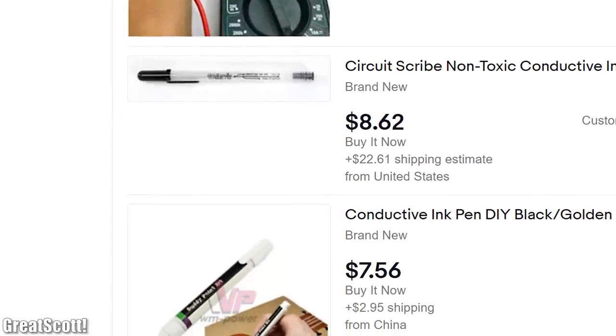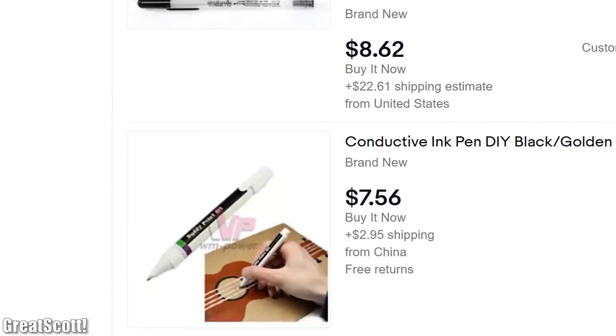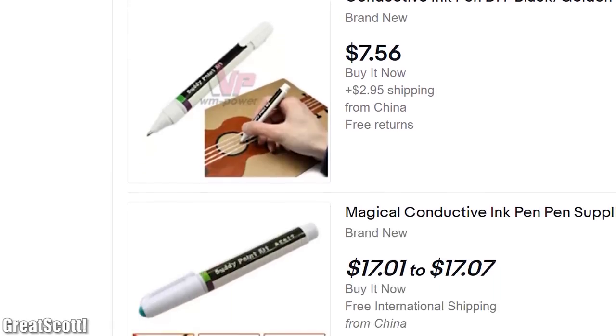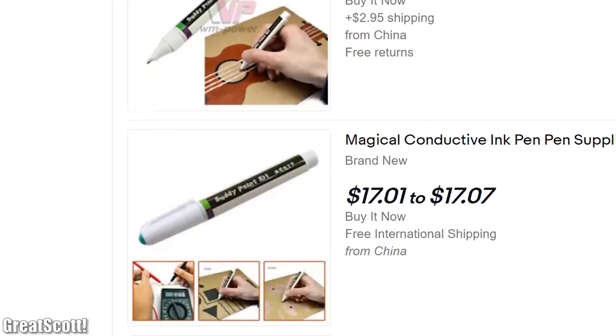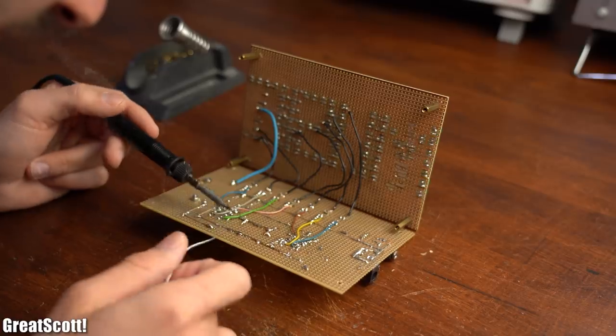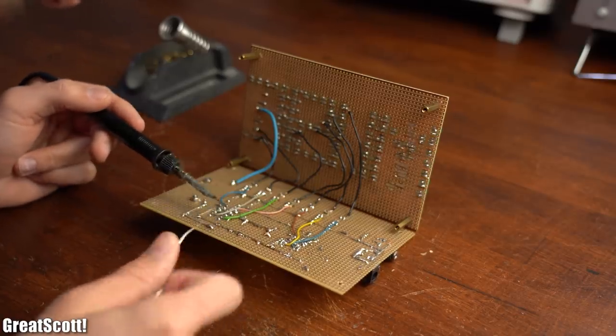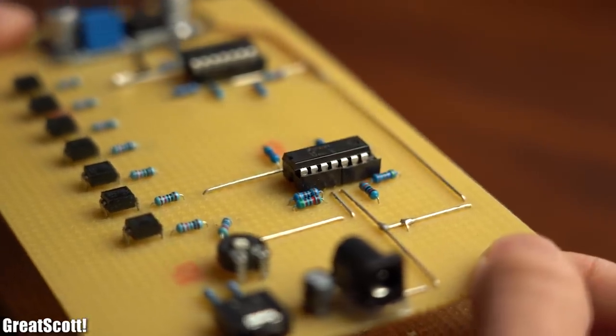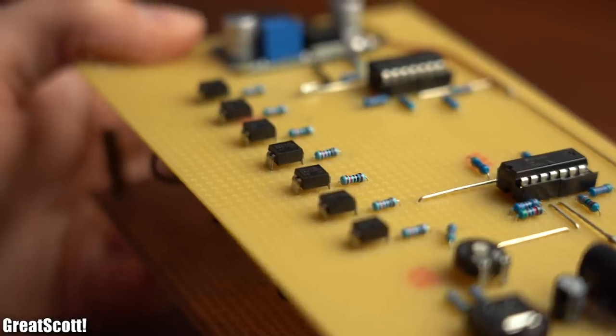Recently I came across conductive ink pens on eBay and I thought to myself I highly doubt that you can make a well working electronic circuit with that. The reason for my thinking this way is that I love creating circuits for which I have to connect individual electrical components to one another, this way they come together to fulfill a purpose like visually reacting to a music signal.